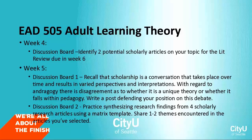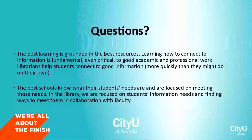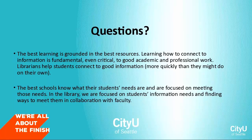The second activity in week five provides practice identifying themes across research articles that may help organize their literature review. Students summarize one to two themes for their peers, turn in a research matrix, and receive feedback and coaching prior to completing the literature review due in week six. I want to leave you with these two thoughts: the best learning is grounded in the best resources, and learning how to connect to information is fundamental — maybe even critical — to good academic and professional work. Our librarians help students connect to good information more quickly than they might on their own, and the best schools know what their students' needs are and are focused on meeting them.